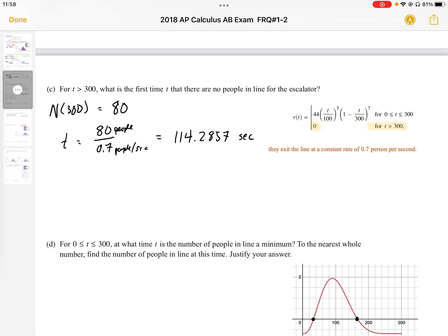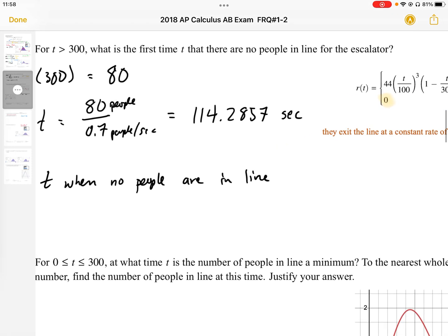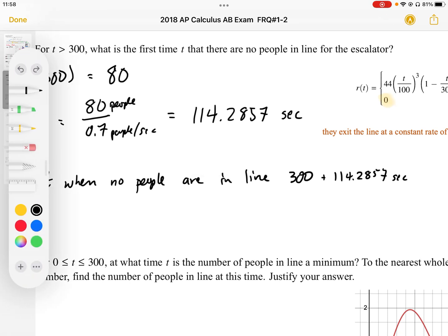So the time at which no people are in line is going to be 300 plus 114.2857 seconds it takes to empty the line from after t equals 300, which is going to be 414.2, we're going to round that to 414.3 seconds.